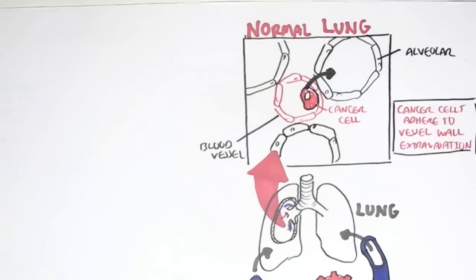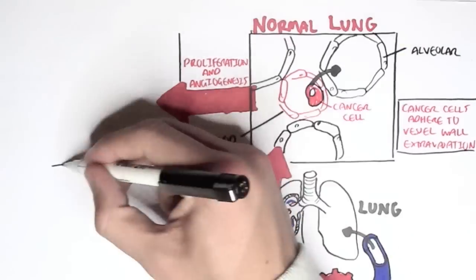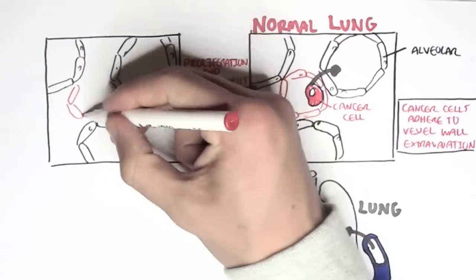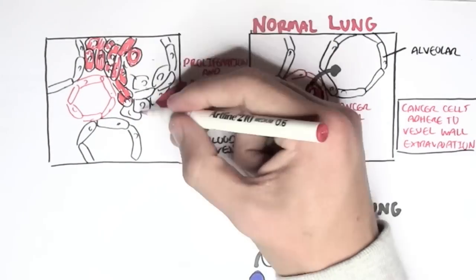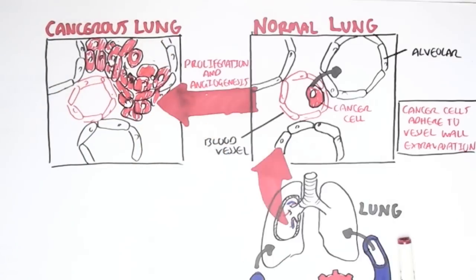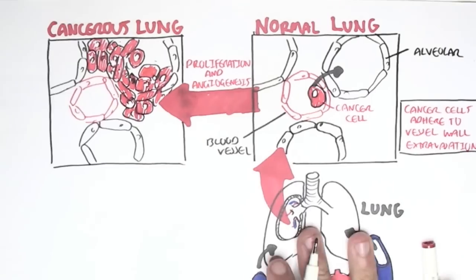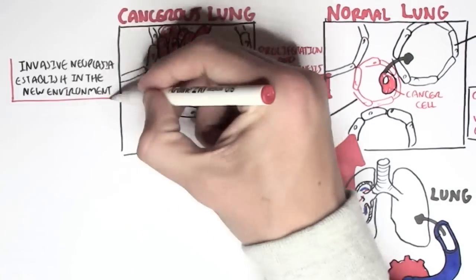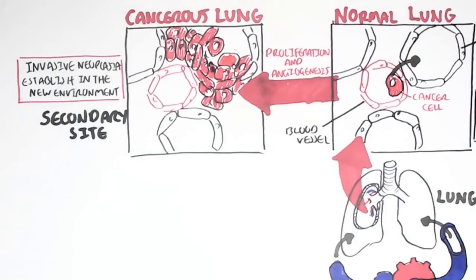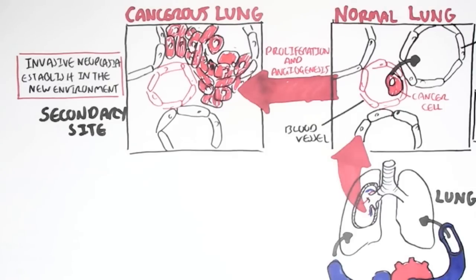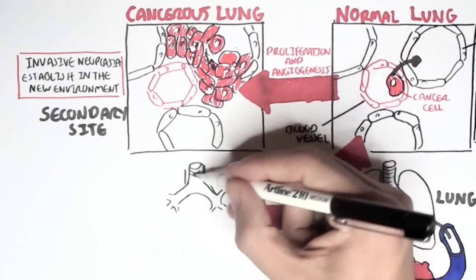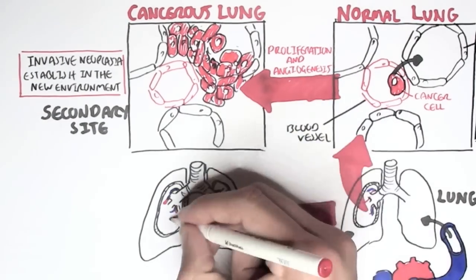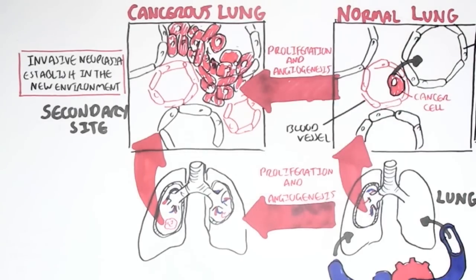From here, the cancerous cells will proliferate and also cause angiogenesis, and through this will form a tumor — a neoplasia — making this a cancerous lung. The invasive neoplasia has established itself in the new environment, which is the secondary site. The primary site was the breast, and because the cancer has spread to the lungs, the lungs are known as a secondary site. The lung develops tumors, caused by the proliferation of cells as well as angiogenesis.